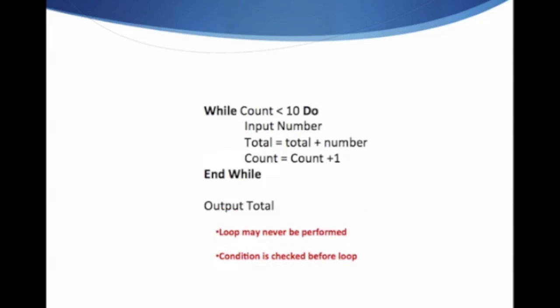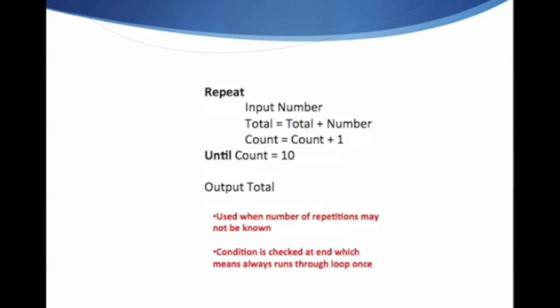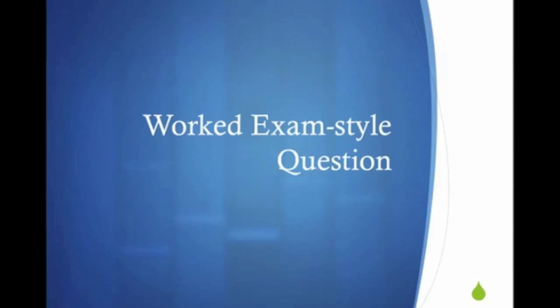The final loop, I know it's so easy right, there's only three, is repeat-until. This loop is used when the number of repetitions is unknown. Also, the condition is checked at the end, which means the loop is always run through once. This is an example using the loop: repeat, input number, total equals total plus number, count equals count plus one, until count equals ten, output total.